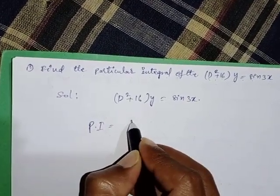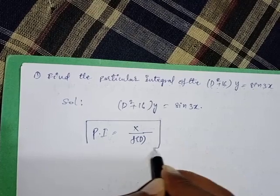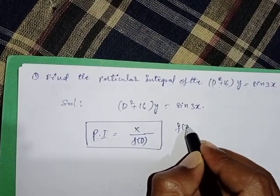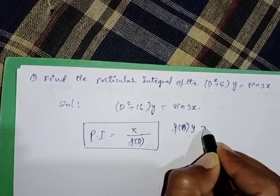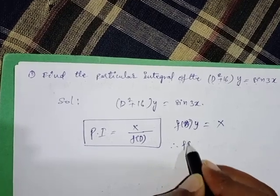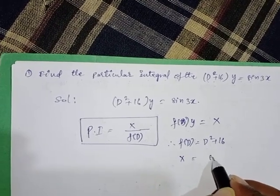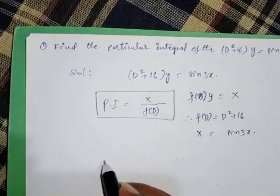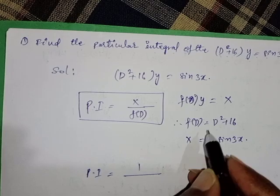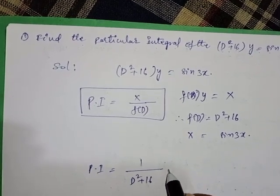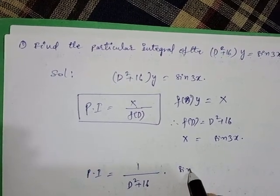The particular integral formula is 1 upon f(D) into x, where f(D) into y equals x. Here f(D) is equal to D squared plus 16, and x is equal to sin 3x. That is, the particular integral equals 1 upon f(D), which is D squared plus 16, into sin 3x.